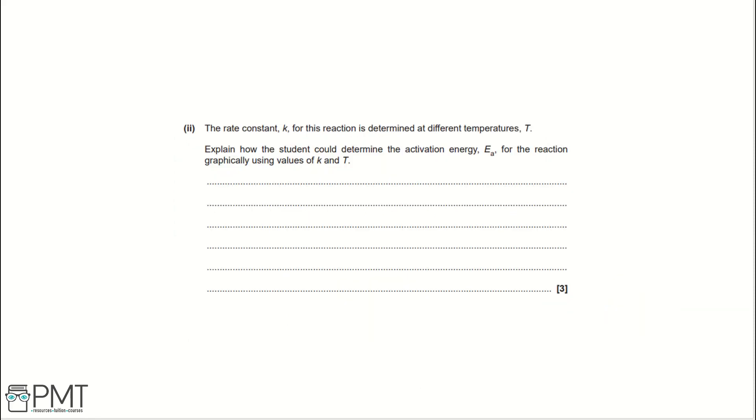Part 2. The rate constant K for this reaction is determined at different temperatures T. Explain how the student could determine the activation energy for the reaction graphically using values of K and T. In our data sheets, we get given an equation that links all of these pieces of information together. That equation is lnK equals EA over minus RT plus lnA.